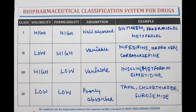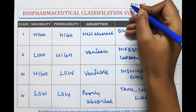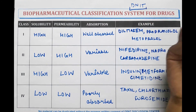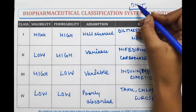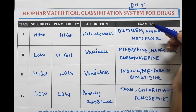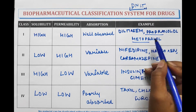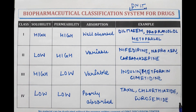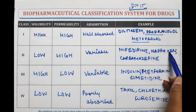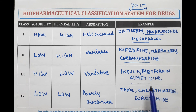A trick to remember the drugs is D-N-I-T, like IT schools. D stands for diltiazem, N for nifedipine, I for insulin, and T for taxol — representing class one, two, three, and four respectively. Other drugs: class one contains diltiazem, propranolol, metoprolol; class two contains nifedipine, naproxen, and carbamazepine; class three contains insulin, metformin, and cimetidine; and class four contains taxol, chlorothiazide, and furosemide.